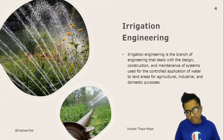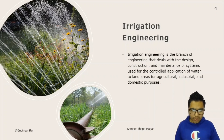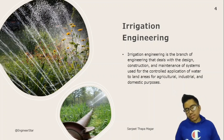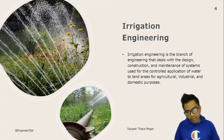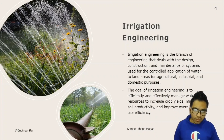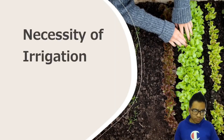Irrigation engineering is the branch of engineering that deals with the design, construction, and maintenance of systems used for the controlled application of water to land areas for agricultural, industrial, and domestic purposes. The goal of irrigation engineering is to efficiently and effectively manage water resources to increase crop yield, maintain soil productivity, and improve overall water use efficiency.